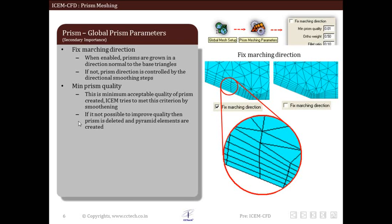Pyramid elements created during this process are of very bad quality and quality of these elements cannot be improved. It is recommended to set this criteria as low as possible to avoid creation of pyramid elements and then improve the quality of prisms by smoothing.